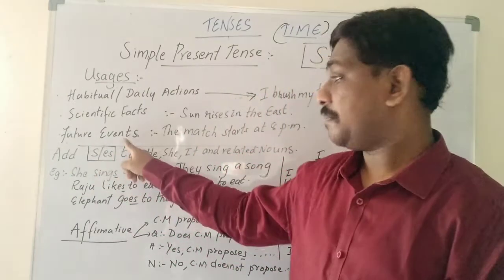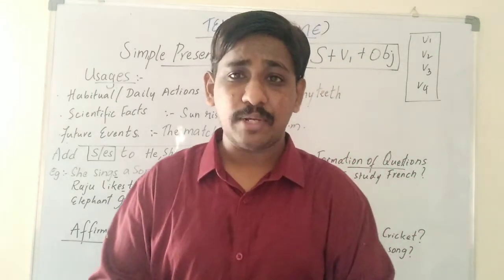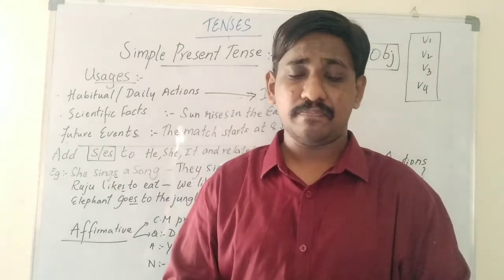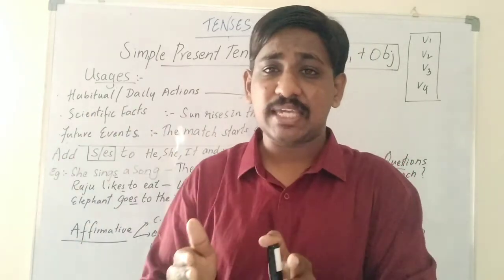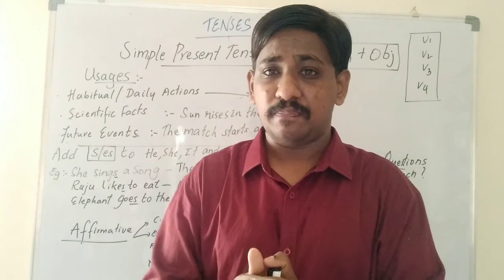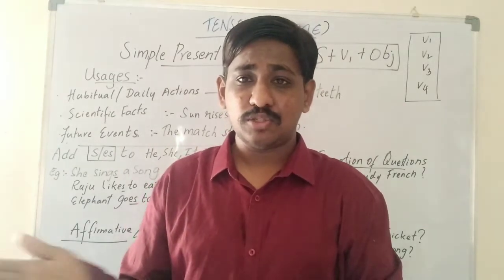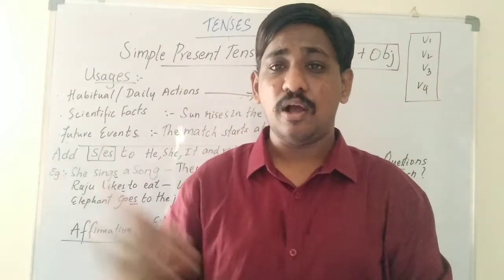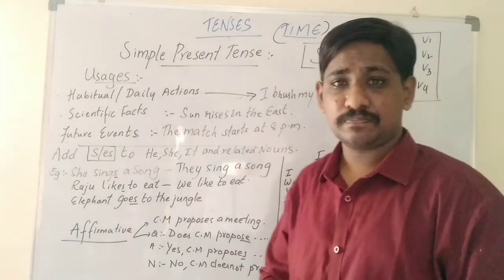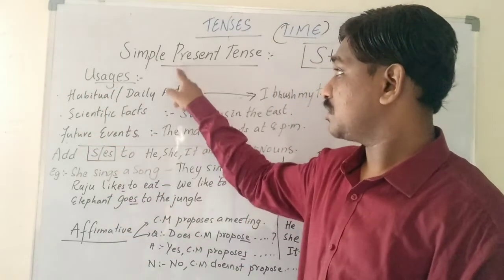The third way of using is for future events. Do you use simple present tense for future? Yes, you do. For example, the program begins at 5 p.m. — it's now 10 a.m., so that is a future action. You find this usually when you watch TV cricket matches: 'The match begins or starts at 8 p.m.' Future actions also can be expressed in simple present tense. These are the three ways we use simple present tense.